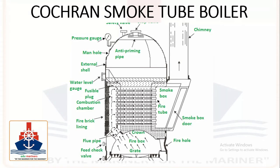Friends, this is a Cochrane smoke tube boiler. Here fuel is burnt in the furnace and hot gas is produced. This hot gas goes to the combustion chamber and through the smoke tubes it goes to the smoke box and then to the uptake.